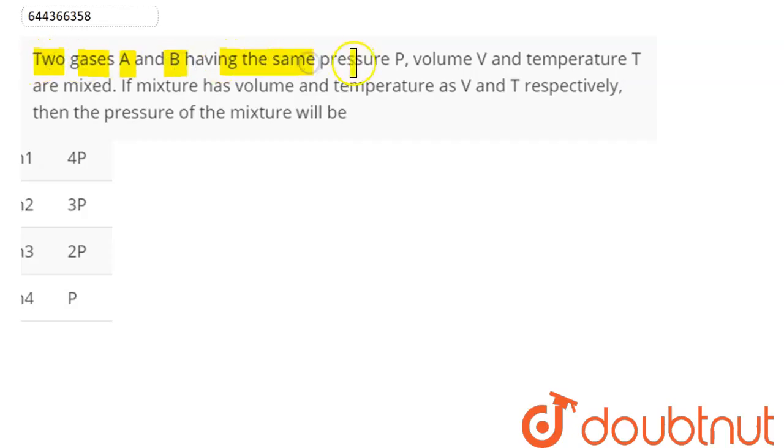Two gases A and B having same pressure P, volume V, and temperature T are mixed. If mixture has volume and temperature as V and T respectively, then pressure of the mixture will be...